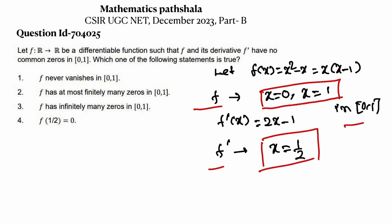Let's check the options. Option 1 says f never vanishes in [0,1], meaning f has no zeros in [0,1]. But we can see f has zeros at x=0 and x=1, so f does vanish there. Option 1 is false. Option 2 says f has at most finitely many zeros in [0,1]. In our example there are two zeros, which is finite. So by the example we can say option 2 is true.